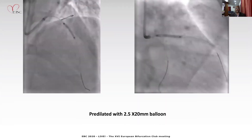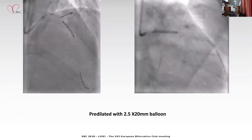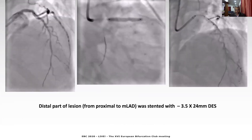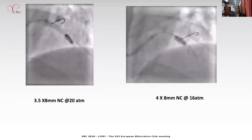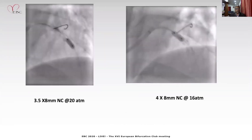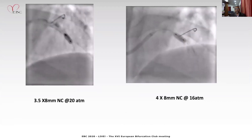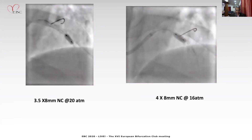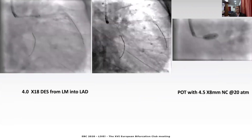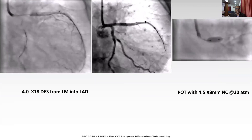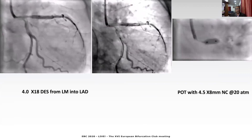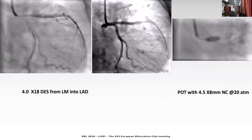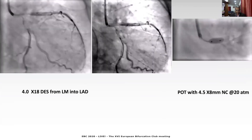The lesion was pre-dilated and the distal part was stented with a 3.5 mm x 24 mm drug-eluting stent at 14 atmospheres. The distal most part was post-dilated with a 3.5 mm non-compliant balloon at 20 atmospheres and the proximal part with a 4 mm non-compliant balloon at 16 atmospheres. Then we placed another 4 x 18 mm drug-eluting stent from left main to LAD, overlapping with the first stent across the circumflex, deployed at 14 atmospheres, and post-dilated with a 4.5 mm non-compliant balloon at 20 atmospheres.